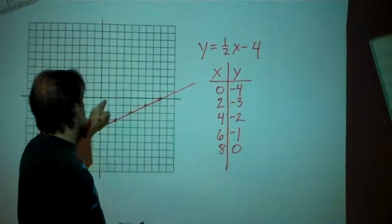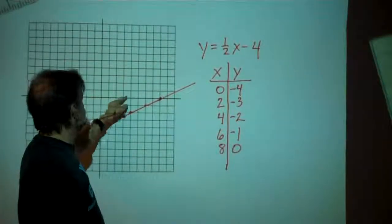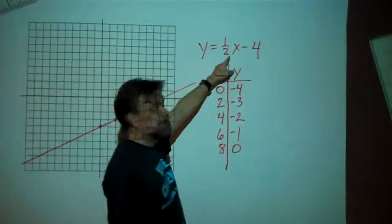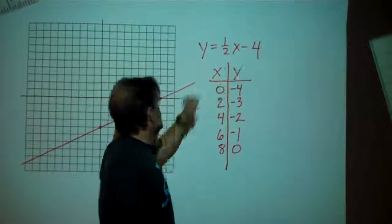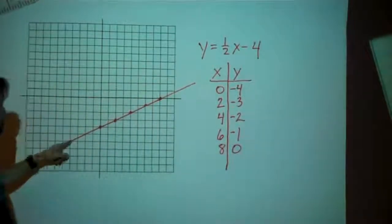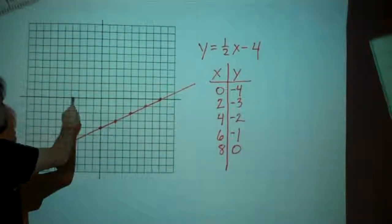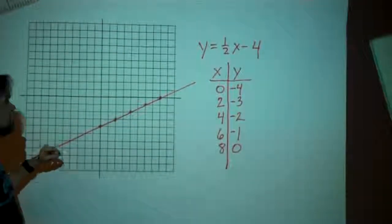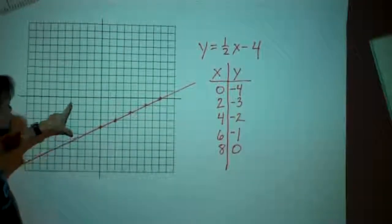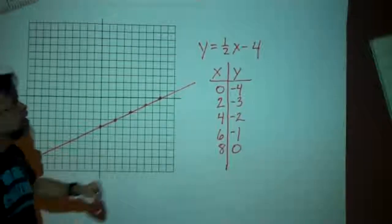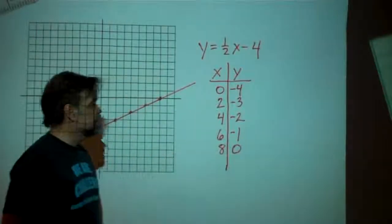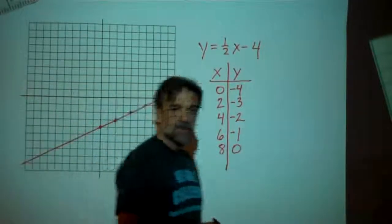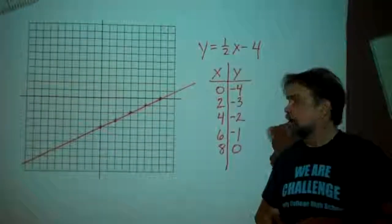For example, this point right here is (10, 1) — if you take half of 10, that's 5, minus 4 is 1. This point right here is (negative 4, negative 6) — if you take half of negative 4, that's negative 2, minus 4 gets you negative 6. Every single point on the line has that characteristic. And so that's an easy way to graph lines.